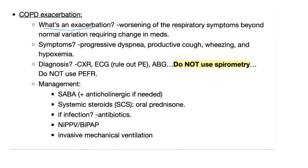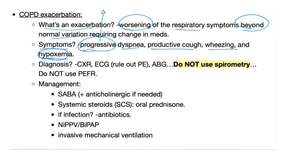COPD exacerbation — definition: worsening of respiratory symptoms beyond normal variation requiring change in medications. Symptoms: progressive dyspnea, productive cough, wheezing, and hypoxemia. Diagnosis: chest X-ray and ECG — to rule out pulmonary embolism. Use ECG rather than CT pulmonary angiography to avoid radiation exposure; look for EKG changes associated with PE. Also use arterial blood gas.